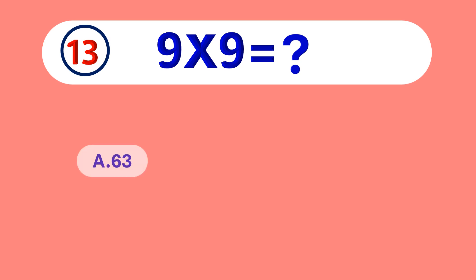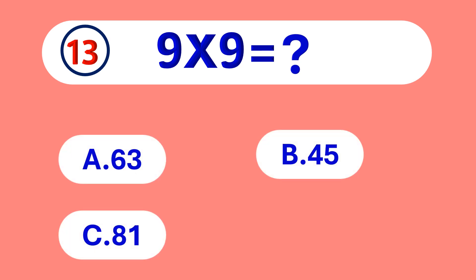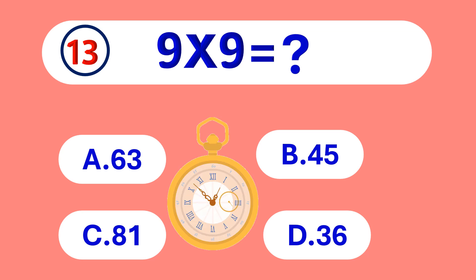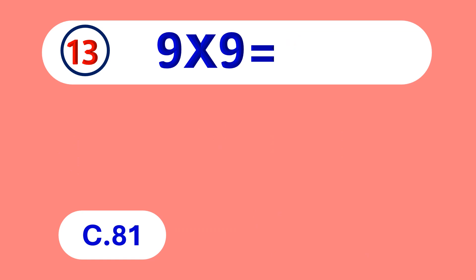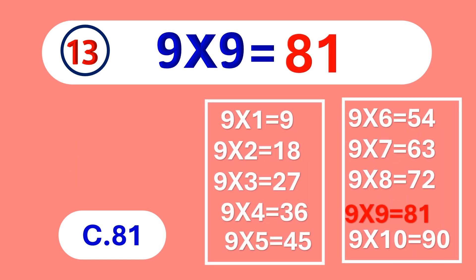9 times 9 is equal to... 81. 9 times 9 is 81.